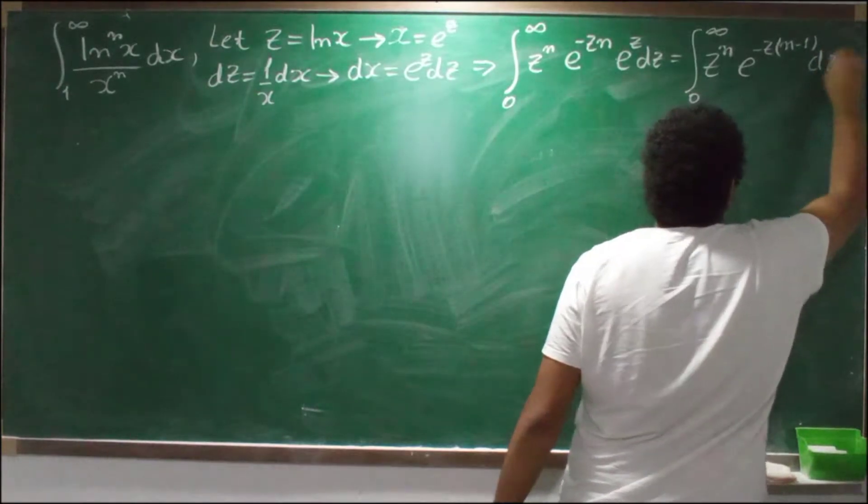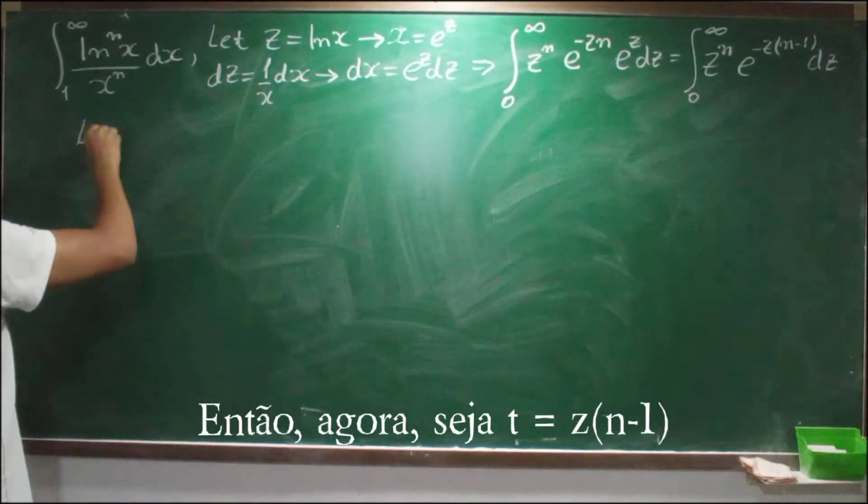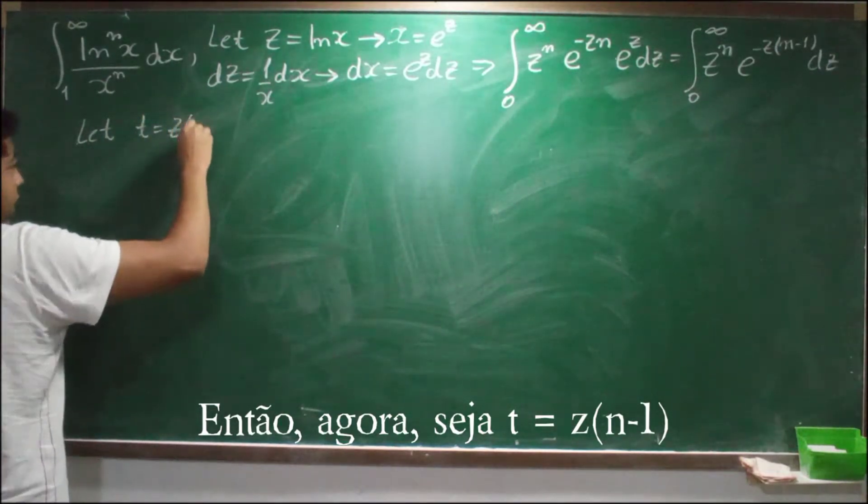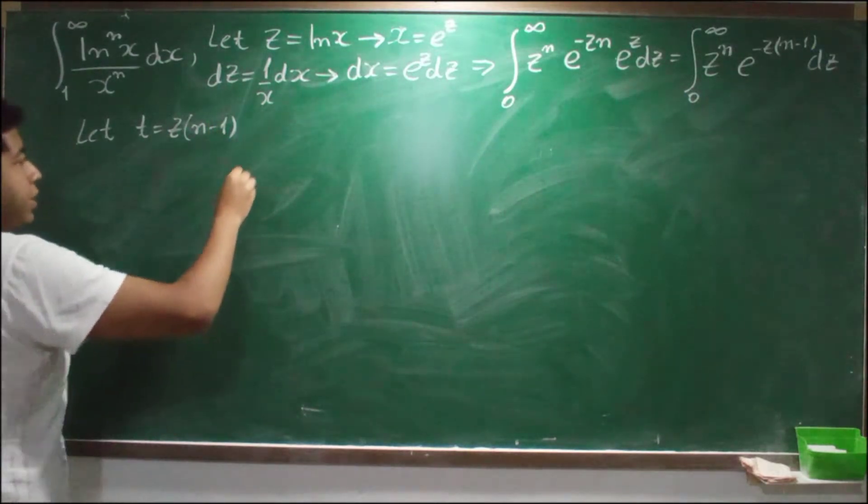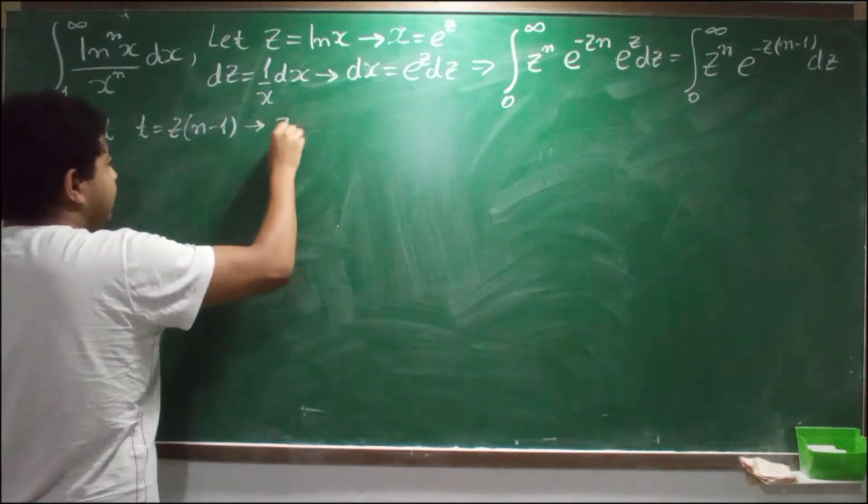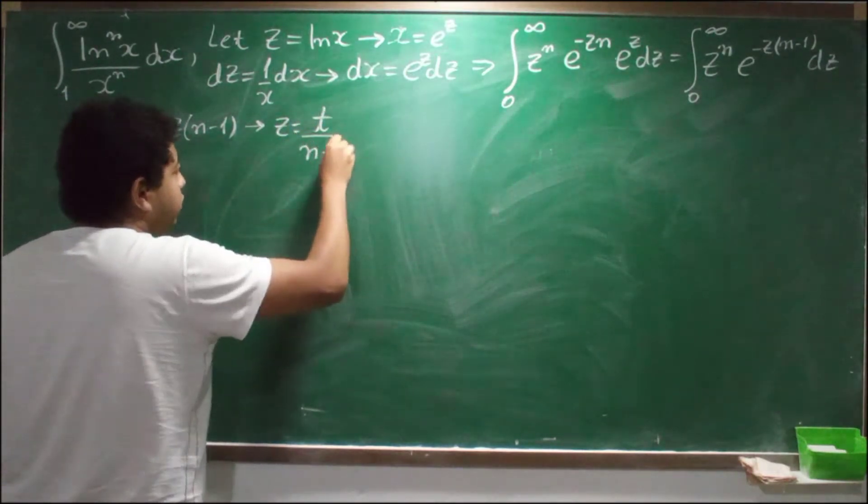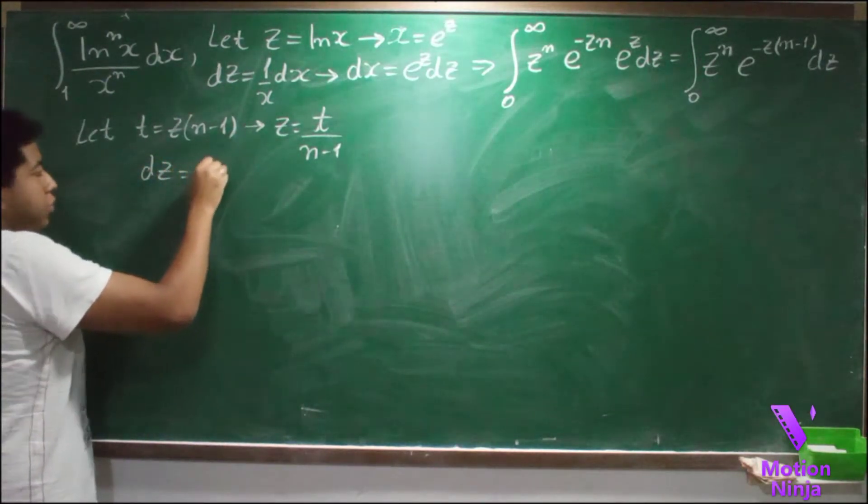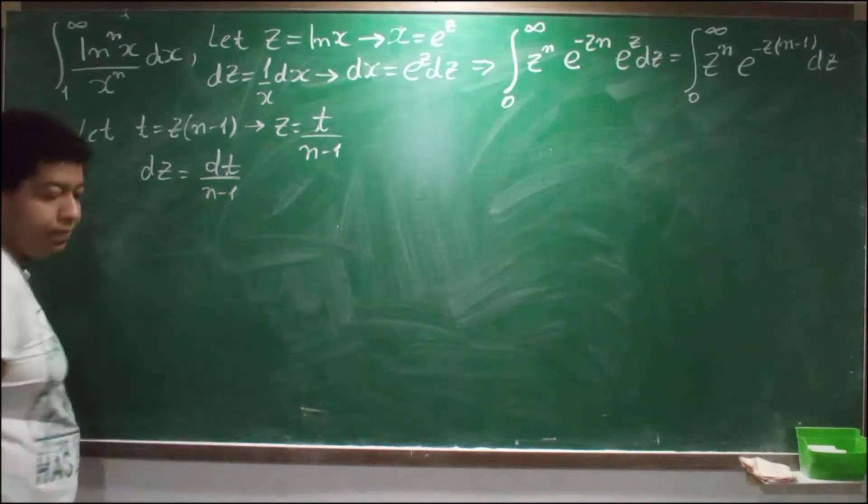So now let t equal to z times n minus 1. That means z is equal to t over n minus 1, and dz is equal to dt over n minus 1.